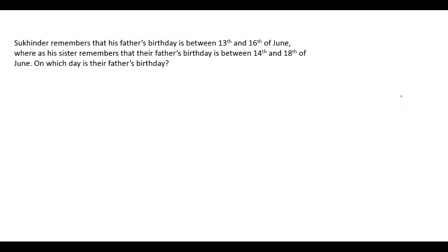Here is the first question on the screen: Sukhvinder remembers that his father's birthday is between 13th and 16th of June, whereas his sister remembers that their father's birthday is between 14th and 18th of June. The month is the same. Sukhvinder says the birthday is between 13th and 16th, which means it is on 14th or 15th.